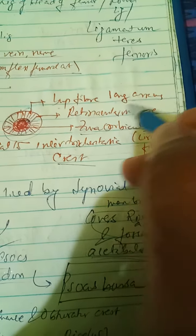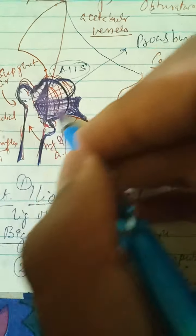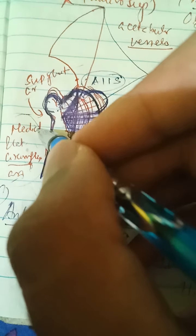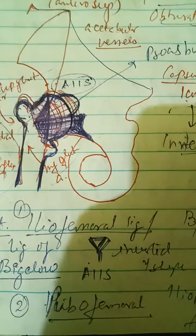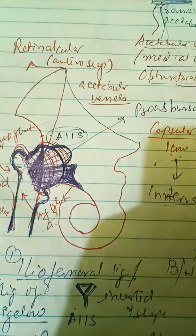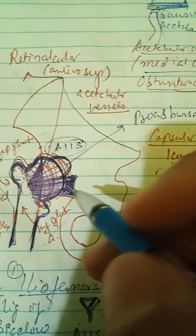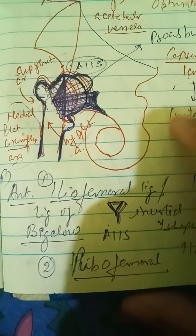The superior longitudinal fibers are attached peripherally. Through the retinacula, between the longitudinal fibers, lie branches of the superior gluteal artery, inferior gluteal artery, and the medial and lateral circumflex femoral arteries including their ascending branches. This is all about the capsular ligament.